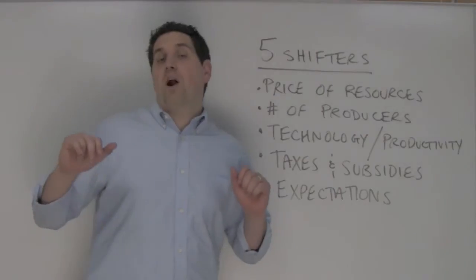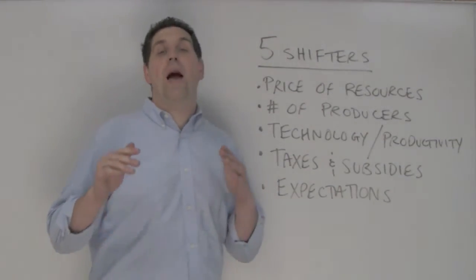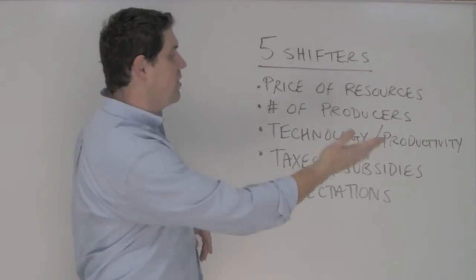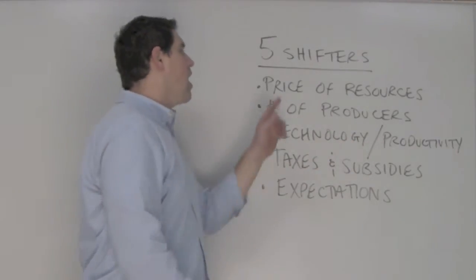Bonus round. There are five shifters of supply that you absolutely have to know. These are things that cause the supply curve to shift to the right or to the left.